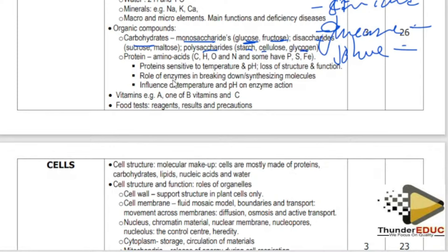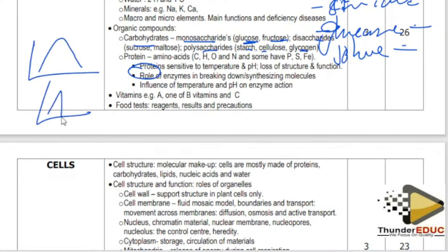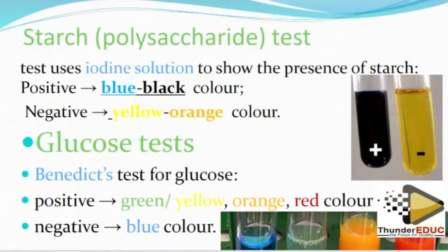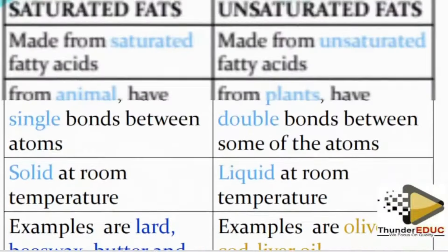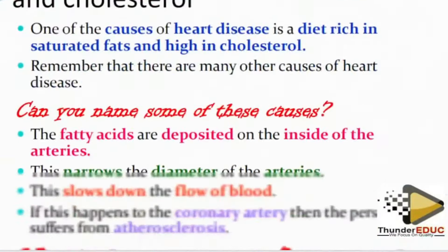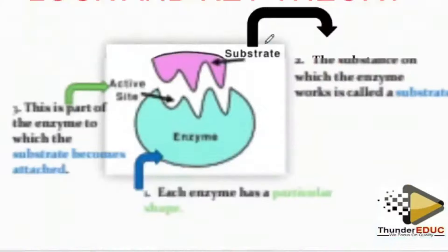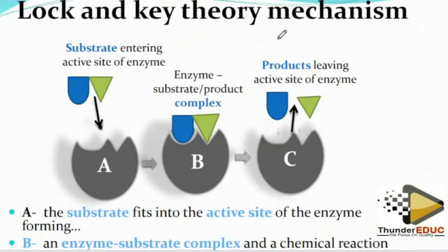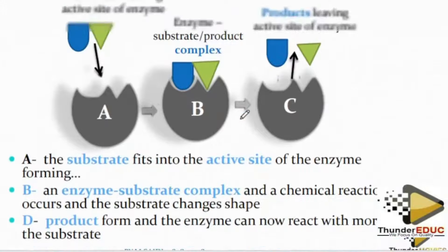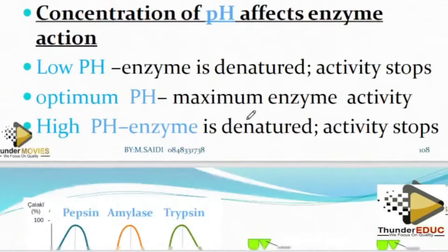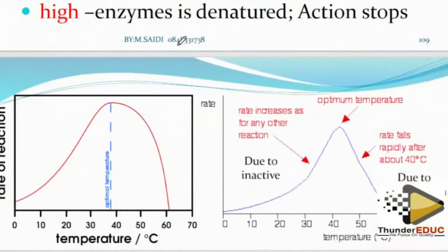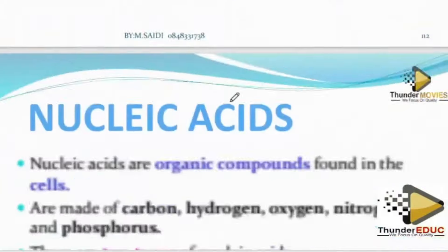When you come to enzymes, don't go to the paper without knowing the factors affecting enzyme activity — temperature and pH. Know these graphs. The key-and-lock hypothesis is also important — know how enzymes work. Don't go without knowing those graphs for temperature and pH effects on enzyme activity.